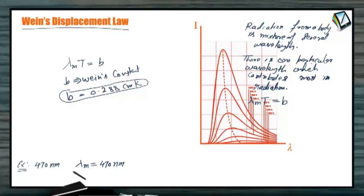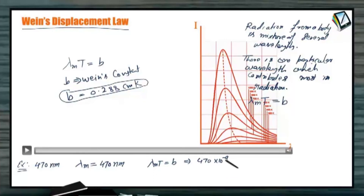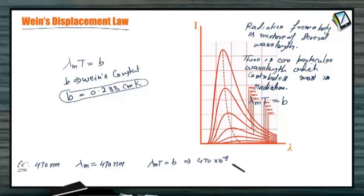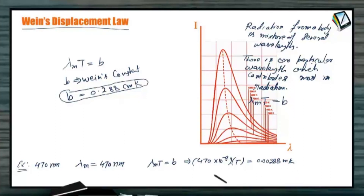Since 470nm is the wavelength corresponding to maximum contribution to total radiation, according to Wien's displacement law: lambda_M × T = B. So lambda_M = 470 nanometers = 470 × 10⁻⁹ meters, and we solve for the absolute temperature T. In MKS system, B = 0.00288 meter·Kelvin. This way we can calculate the absolute temperature of the sun, which is found to be 6130 Kelvin.